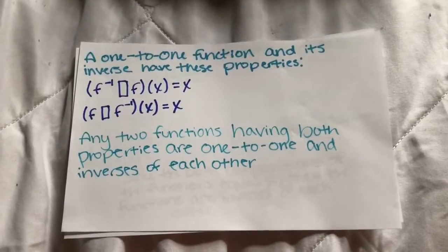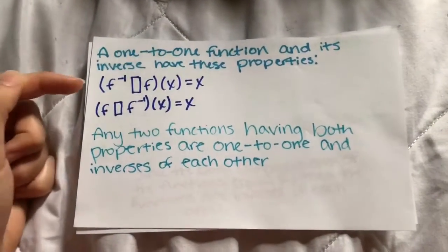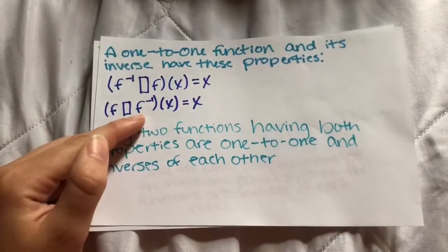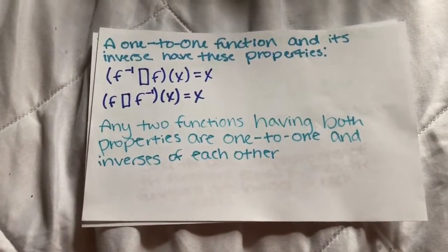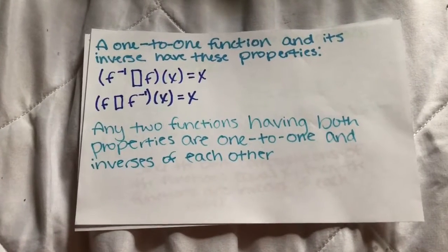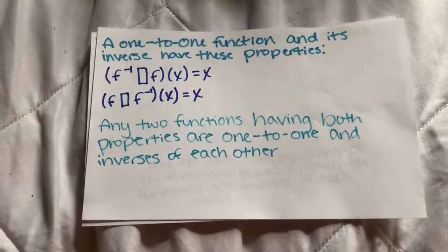A one-to-one function and its inverse has these properties. Since they're the inverse, the f and the inverse of f are just switched. Any two functions having both properties are one-to-one and inverses of each other. That's just a good tip to have.